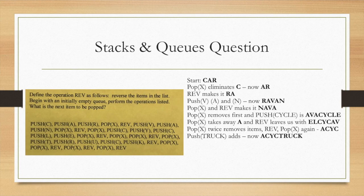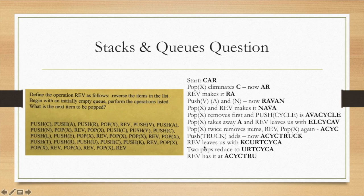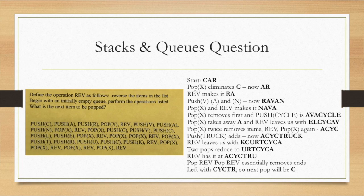And then you go on. You add T, R, U, C, K by pushing those. So that's A, C, Y, C, T, R, U, C, K. You reverse that, and then pop the first two items, giving you U, R, T, C, Y, C, A. Lastly, we reverse. Make it A, C, Y, C, T, R, U. And then you do this sequence of POP, REV, POP, REV, which pretty much will remove the ends. And what that achieves is that we are left with C, Y, C, T, R. So our next POP, which is the question, will be C.